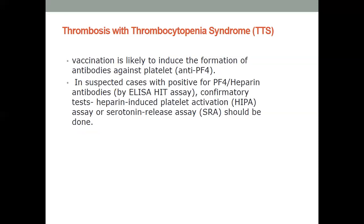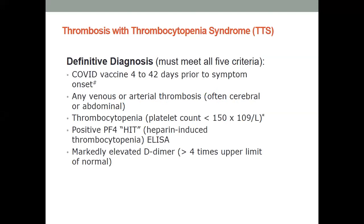Vaccination likely induces formation of antibodies against platelet factor four. In patients with compatible clinical evidence of having received a vaccine and presenting with atypical symptoms, thrombosis is not confined to cerebral circulations — it can also occur at abdominal or even conventional sites. A proposed diagnostic criteria includes: vaccination within 4 to 42 days prior to symptom onset, any venous or arterial thrombosis, thrombocytopenia with platelet count less than 150, positive platelet factor 4 antibodies by ELISA test, and markedly elevated D-dimer.